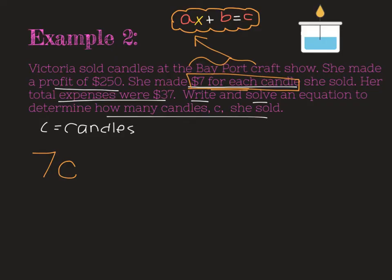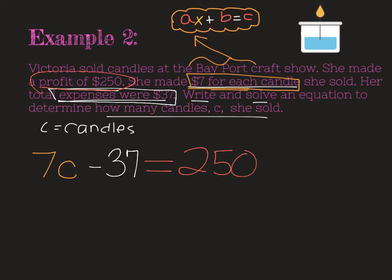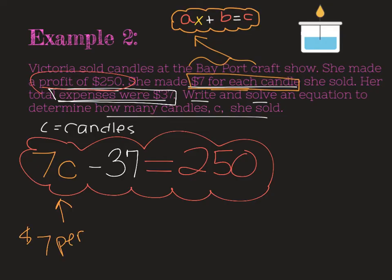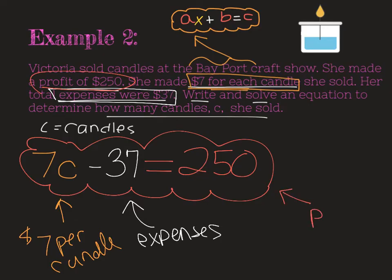Okay, and then it says that she had to pay her expenses, right? She had some expenses that were $37. So what that means is that after she sold her candles, she had to deduct that $37 that it cost her to kind of get things ready, right? That's how much it cost her to be in that craft fair. And after all that, what she had left was her profit. And so that was the $250 that she had remaining. So our equation is seven times C minus 37 equals 250. And this is the $7 per candle. And this 37 that's being taken off, those are her expenses. That's what comes off of what she makes. And then this is her profit.